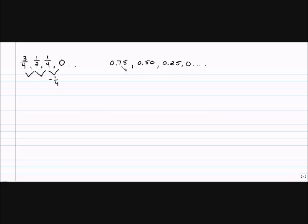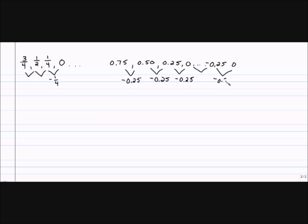It's easier to see in decimals. From 0.75 to 0.50 you went down by 0.25. If you had 0.50 and now you have 0.25, you went down by 0.25 again. So the next number in the sequence would be negative 0.25, then negative 0.50, and then negative 0.75. And there I have the next three terms.